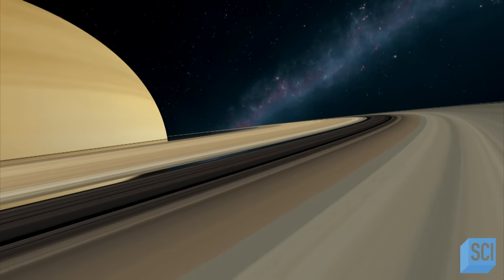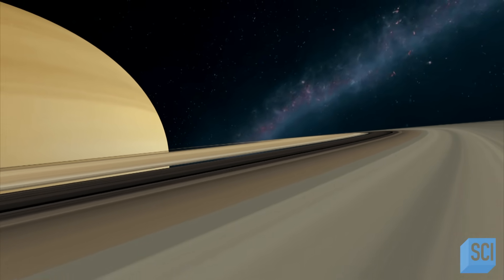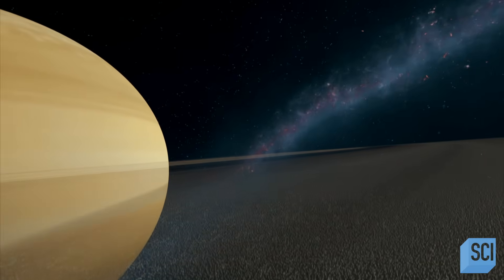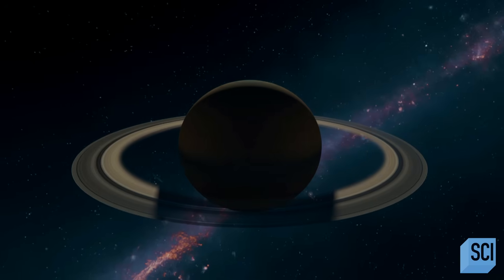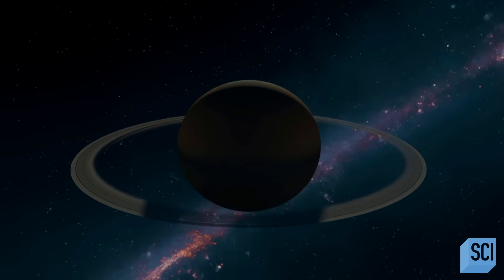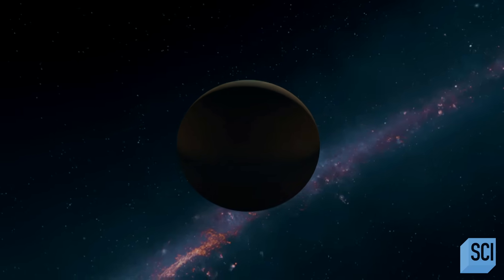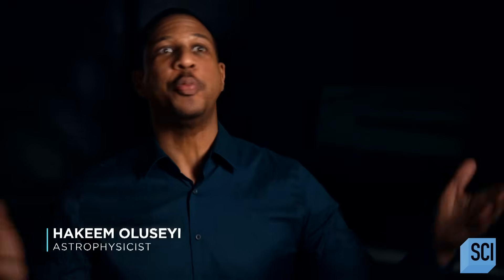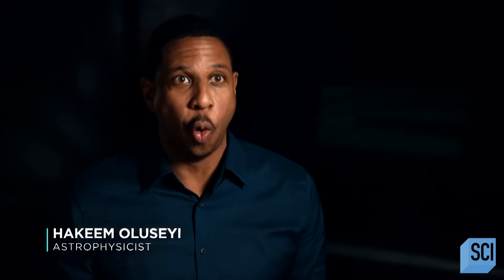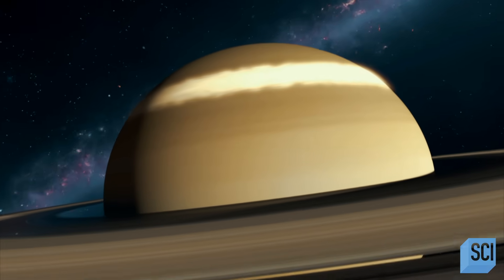100 million years is phenomenally young. Saturn is 4.5 billion years old. If Nicholas is right, Saturn has only had rings for a fraction of its life. We think of the planets as having been around for 100% of the time of the solar system. Well, Saturn's rings, they've only been around for the last 2% of the solar system's age. So they're very new.